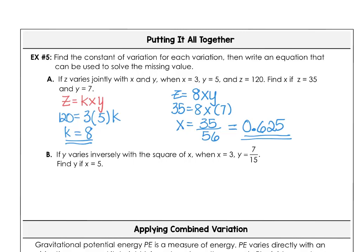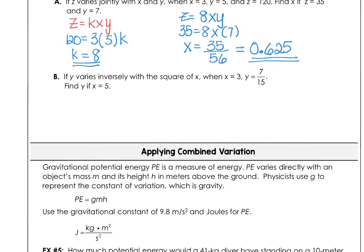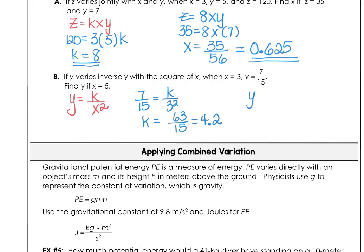In Part B, y varies inversely with the square of x. When x is 3, y is 7/15. So k equals 9 times 7/15, which gives k equals 63/15, or 4.2. To find y when x is 5: y equals 4.2 divided by 25, which is approximately 0.168.